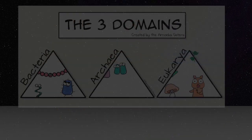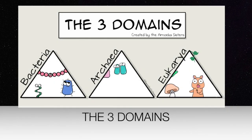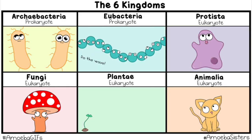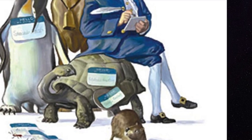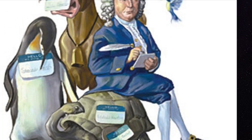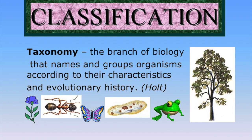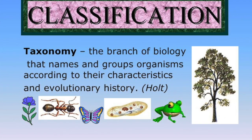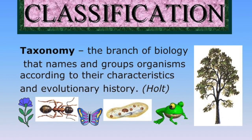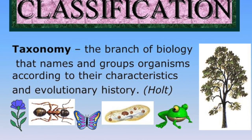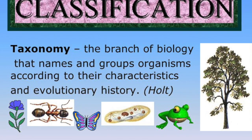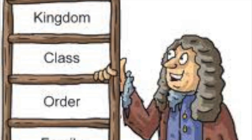We're going to go back to Linnaean taxonomy combined with the concept of domains and kingdoms, and explore the three domains and six kingdoms that Carl Linnaeus focused on for his science of taxonomy. Taxonomy is the science of naming and grouping organisms, and it's the same system we use today.